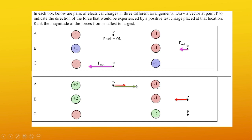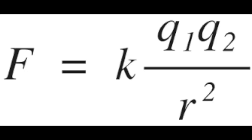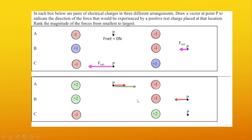For B, we have a force pulling it to the left from our negative one, and then the plus two is going to push it to the right. But is the rightward force bigger or smaller? Well, it is more charge, but if we look, it's really far away. Because of Coulomb's Law — F = K × Q1 × Q2 / R² — we know that R impacts the force a lot more than charge does. Therefore, the force points to the right but is smaller than the force pointing to the left, even though there's more charge, because the charge is very far away.